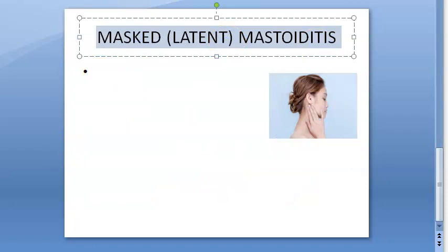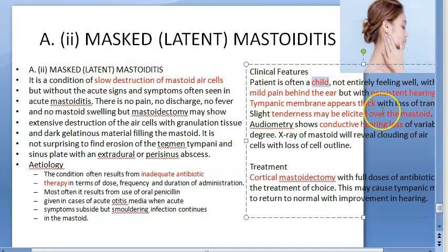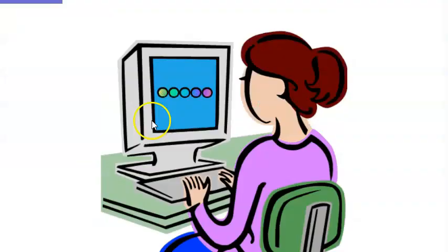Latent or masked mastoiditis occurs due to slow destruction of mastoid air cells caused by inadequate antibiotic therapy. There is mild persistent pain behind the ear. Children are more affected. Signs include mastoid tenderness and conductive hearing loss. Treatment is again cortical mastoidectomy.